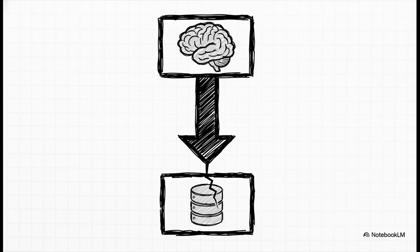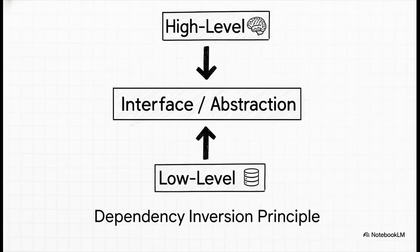But here's the game changer. The object-oriented approach says no. Let's break that direct link. We put an abstraction. You can think of it like a contract or an interface or even a set of plugs on a wall, right in the middle. Now the high-level business logic depends on that contract, and the low-level detail also depends on that same contract. They don't depend on each other anymore.